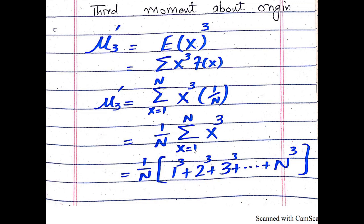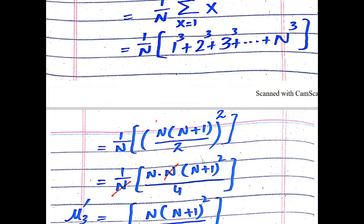Now putting in the values of x: 1³ + 2³ + 3³ + … + N³. The formula for the sum of cubes up to the Nth term is N(N+1)/2 squared, which equals [N(N+1)/2]² multiplied by 1/N.